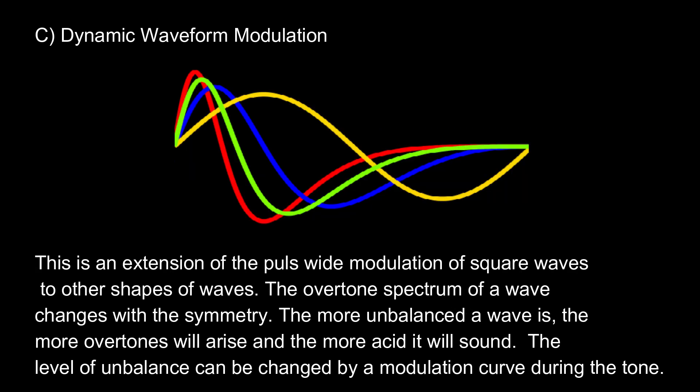C. Dynamic waveform modulation. This is an extension of the pulse-wide modulation of square waves to other shapes of waves. The overtone spectrum of a wave changes with the symmetry. The more unbalanced a wave is, the more overtones will arise and the more acid it will sound.